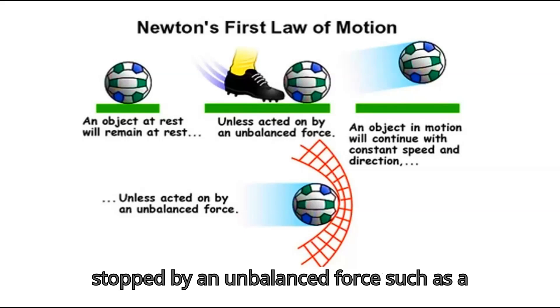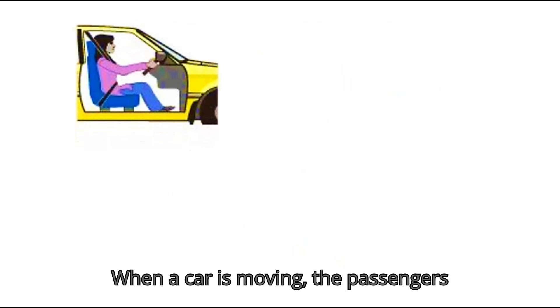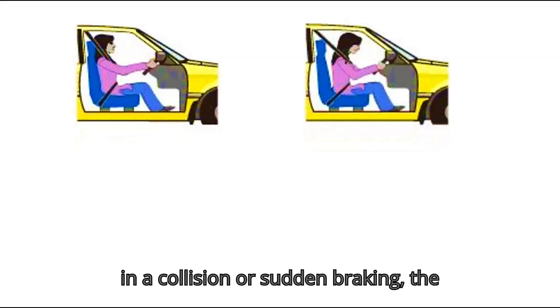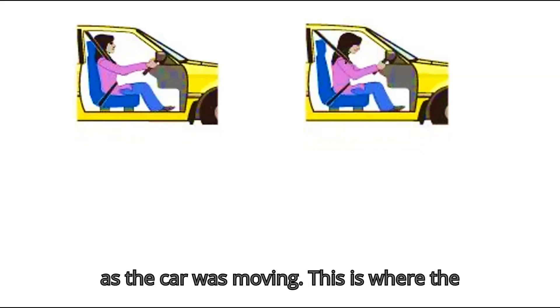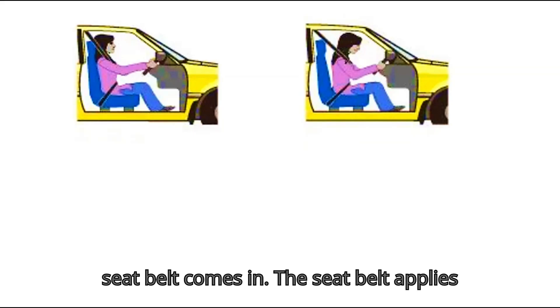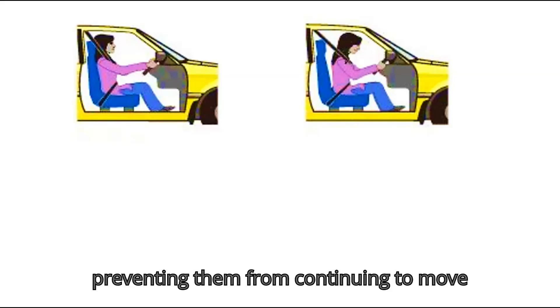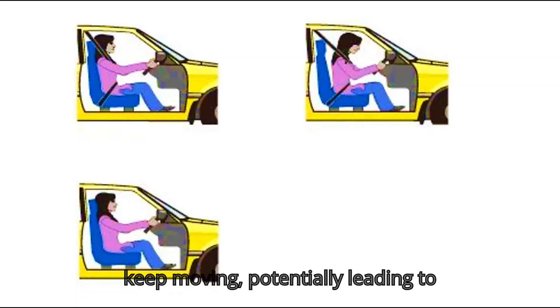Seat belts are a perfect example of how Newton's first law of motion applies in daily life. When a car is moving, the passengers inside are also in motion. If the car suddenly stops or changes direction — as in a collision or sudden braking — the passengers will want to keep moving at the same speed and in the same direction. The seat belt applies an outside force to the passenger, keeping them secure to the seat.